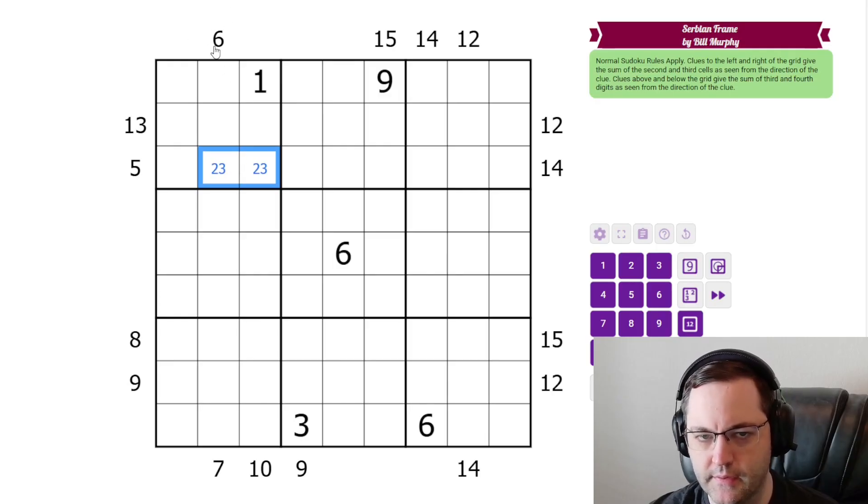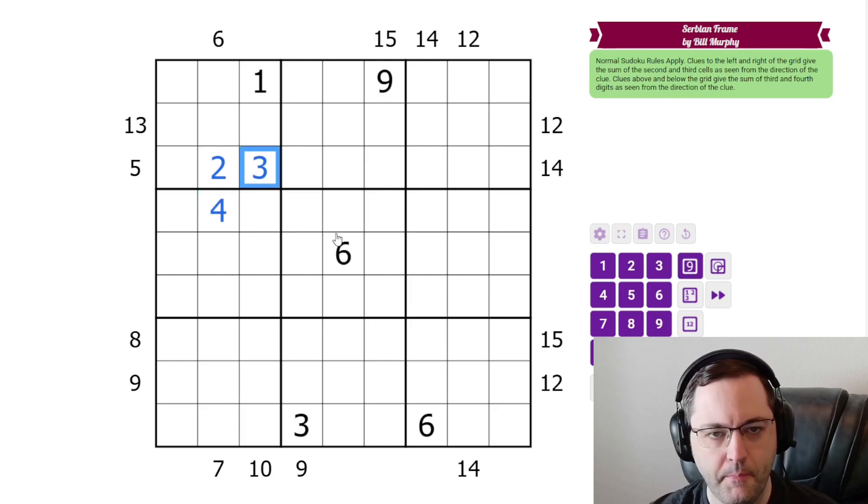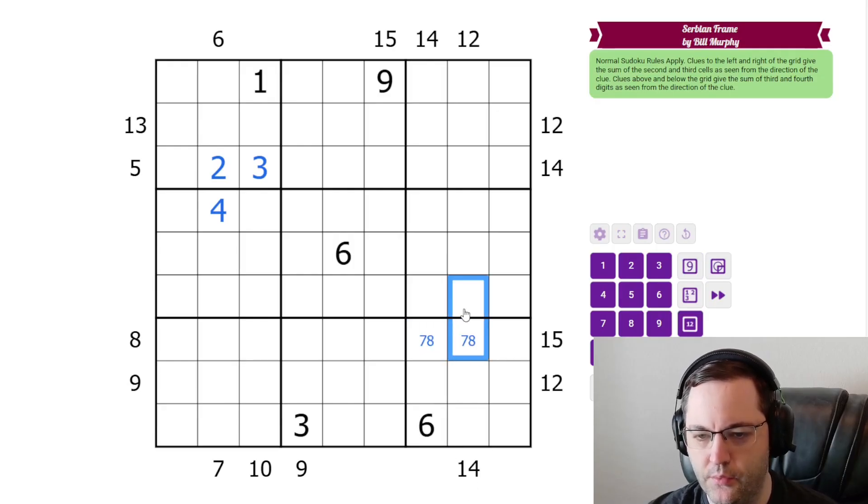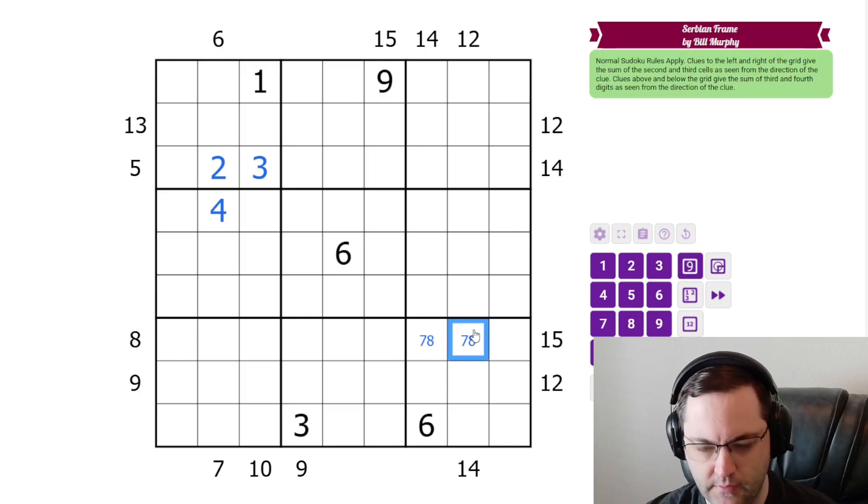And now if we look at the six here, these sum to six. Well, we can't have three, three, that breaks Sudoku. So this is two, four or the three there. Down here, we can do sort of the same thing. 15 can't be six, nine in this case, so it must be seven, eight. And then 14 can't be seven, seven. So this must be eight, six, seven, like that.